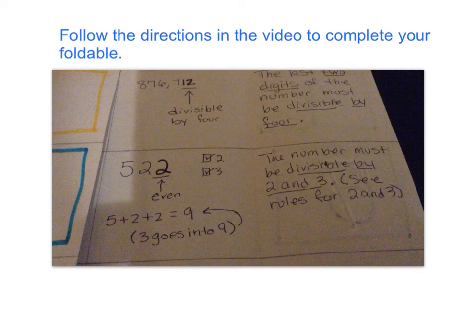So we add the digits. 5 plus 2 plus 2 equals 9. We know that 3 goes into 9, so it's divisible by 3. We can check the 3 box. Yep, it's divisible by 3. So it's divisible by both 2 and 3, which means that it's divisible by 6.